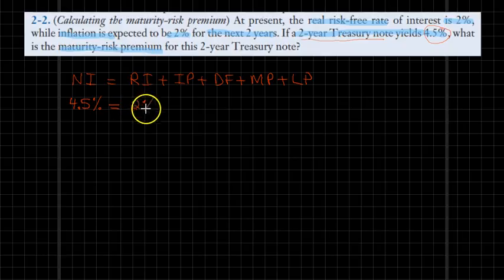The inflation risk premium is also provided as 2%. The default risk premium, by definition, because it is a government bond, is 0. The maturity premium is the question, so the question is particularly asking for that.